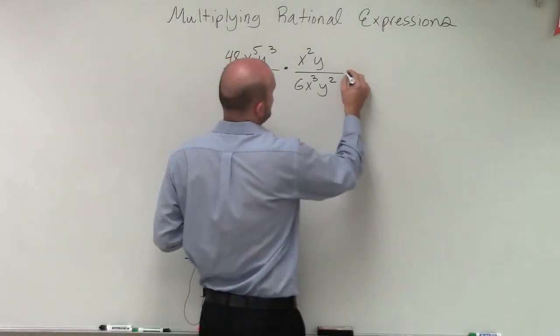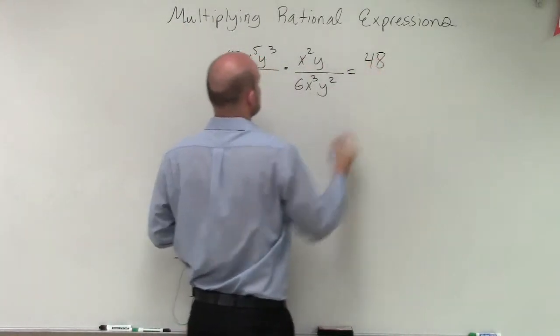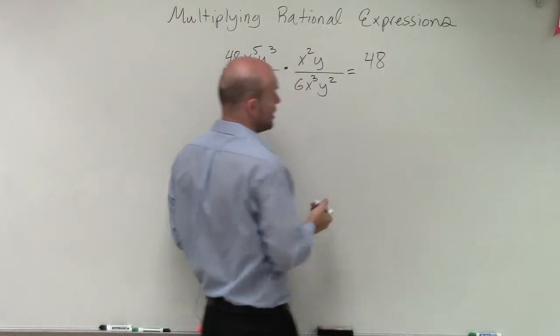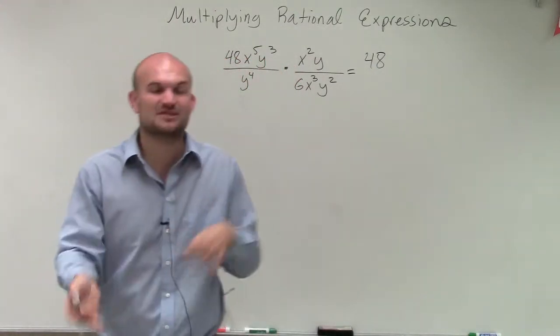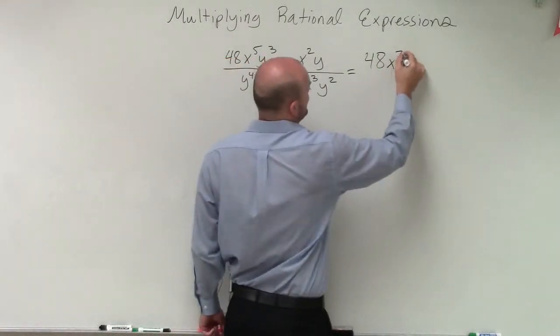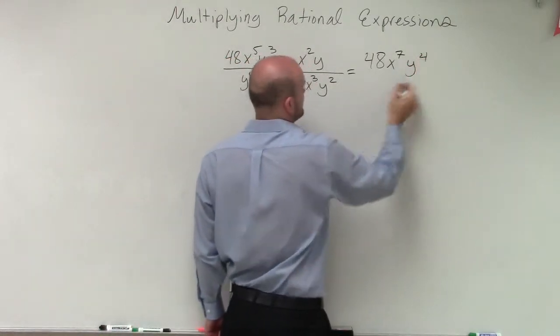As I multiply across, I have 48 times 1, so I'll be left with 48. Now I have x to the fifth times x squared. Rather than showing this step by step, since we've already gone over the rules of exponents, x to the fifth times x squared leaves us with x to the seventh. And y cubed times y leaves us with y to the fourth.